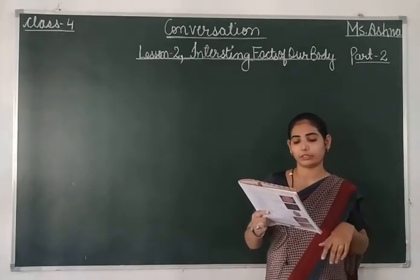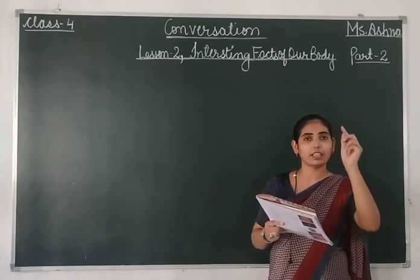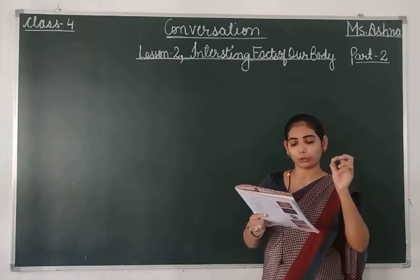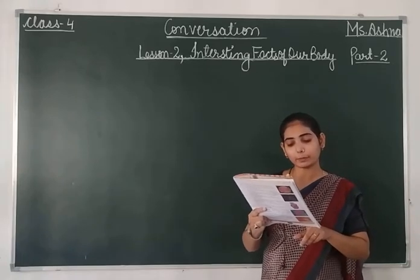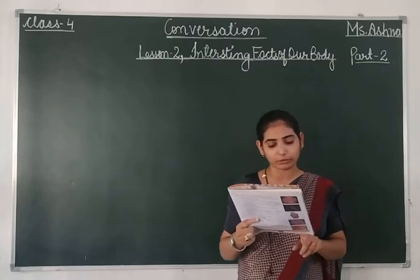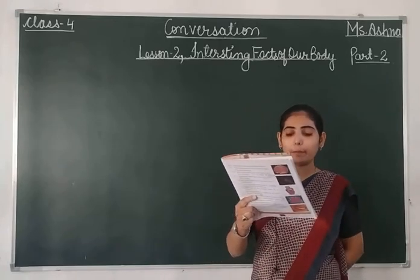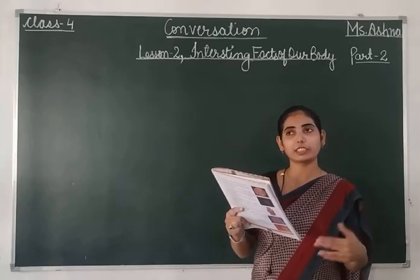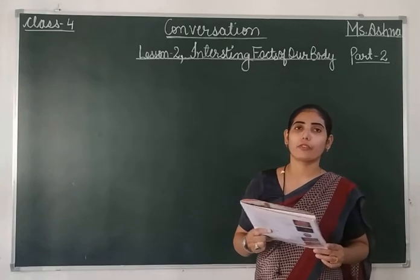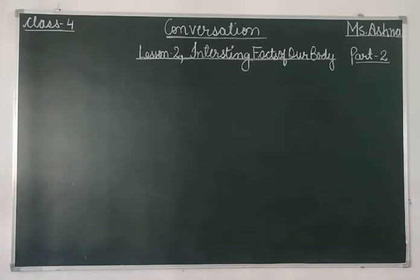Number 6 was: which is the smallest bone in the human body? The smallest bone is in our ear. There are 3 bones in the ear, and the smallest is called the stapes — also written in your book as stapes, located in the ear. Number 7 was: what is the brain mostly made up of? Eighty percent of our brain is made up of water.